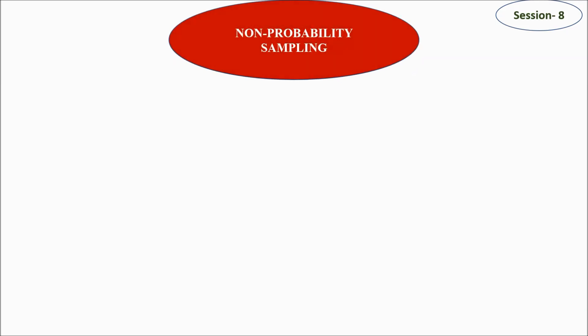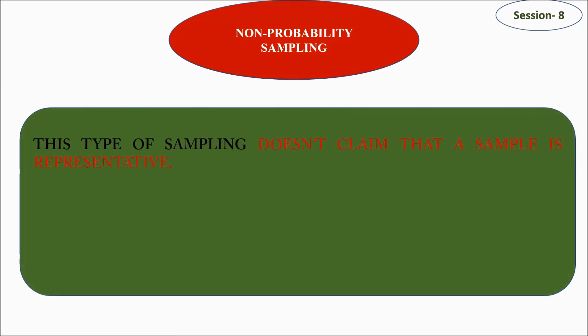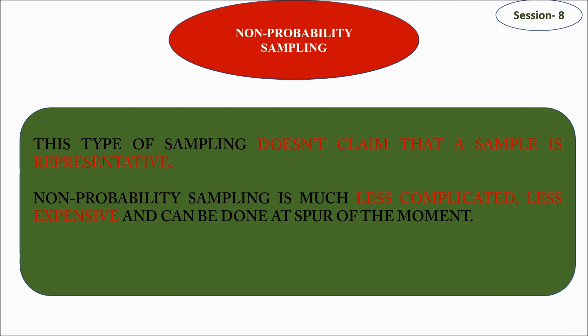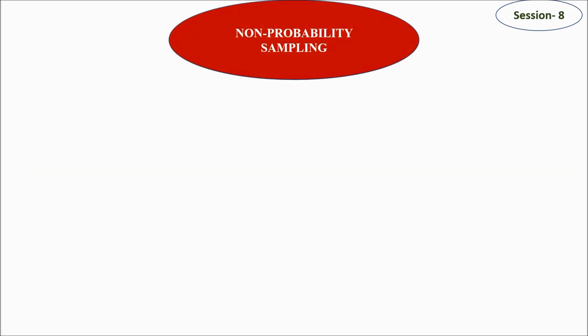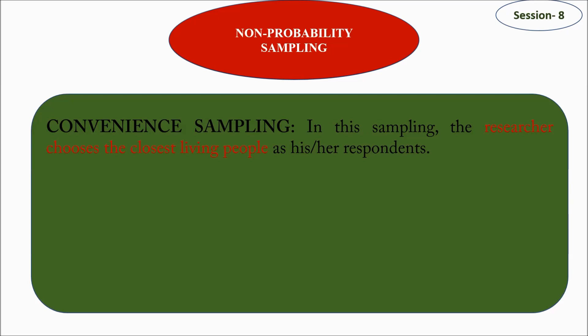Non-probability sampling does not claim that a sample is representative of the population or universe, unlike probability sampling. Non-probability sampling is less complicated and less expensive, and studies can be done based on whoever is available as a sample. The first type is convenience sampling — the researcher decides to talk to people who are very close and accessible, so the respondents are based on the convenience of the researcher.